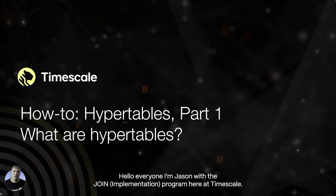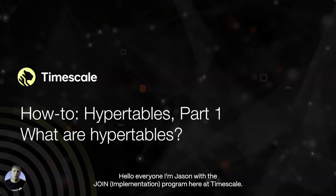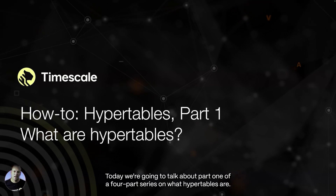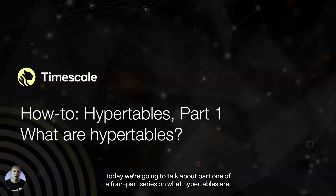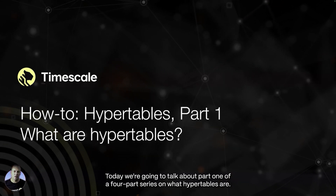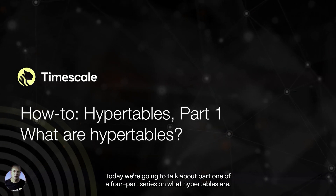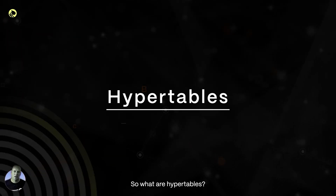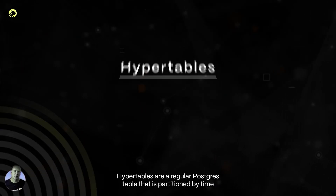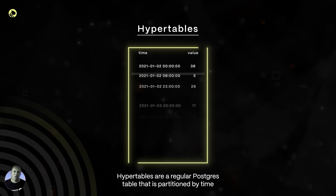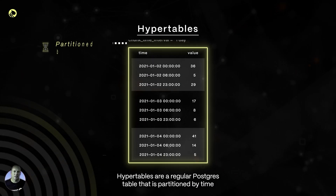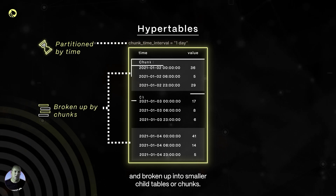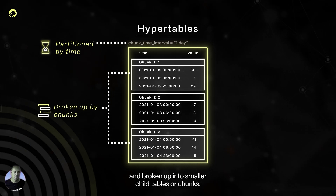Hello everyone. I'm Jason with the JOIN program here at Timescale. Today we're going to talk about part one of a four-part series on what hyper tables are. So what are hyper tables? Hyper tables are a regular Postgres table that is partitioned by time and broken up into smaller child tables or chunks.